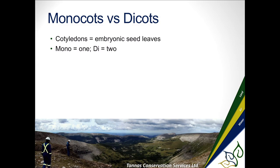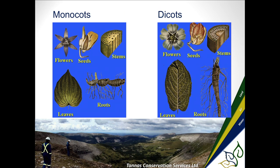Starting with monocots: parallel leaf venation is one of the nicest places to start, but pay attention — sometimes you can get ones with parallel leaf venation and webbing in between, and they're actually dicots. Tree rings are more of a dicot or gymnosperm thing. Monocots will have vascular bundles, so a cross-section of bamboo looks different than normal tree rings.